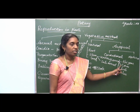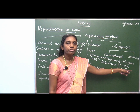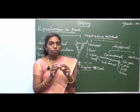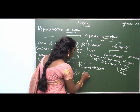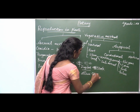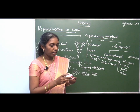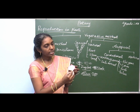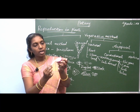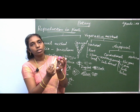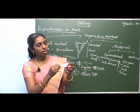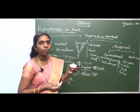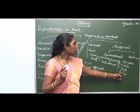Corm — an example is Colocasia — is also able to develop into a new species. Bulb — example Allium cepa, commonly known as onion. In the onion, there are a number of scale leaves, a reduced stem, and adventitious roots. There is an axillary bud here, and these buds are able to develop into the entire organism.